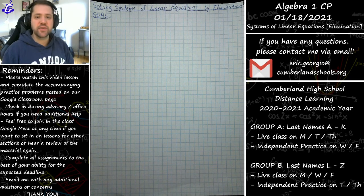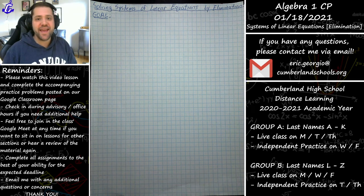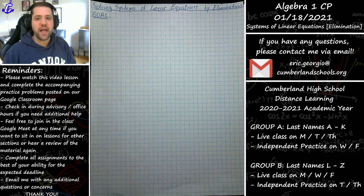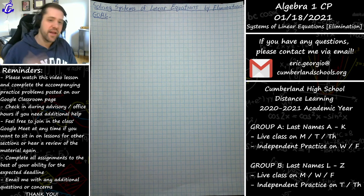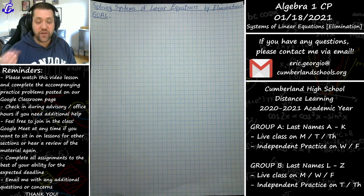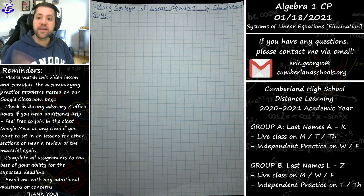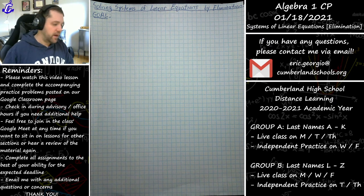Hello Algebra 1CP students, hopefully you're having a great day. Today I would like to start showing you the third and final method of solving systems of linear equations that we'll be taking a look at in Algebra 1CP, and that is solving by elimination. We're still dealing with two equations with two variables x and y, trying to solve for the value of x and y that satisfies both equations simultaneously. We did solving by graphing, we did solving by substitution, and now we're going to be solving by elimination.